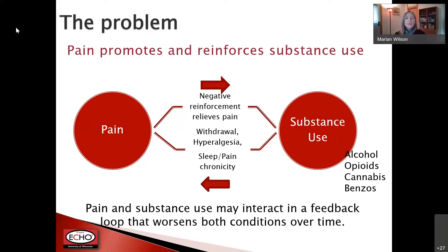When you think about pain and substance use, people use substances because it's positively reinforcing — it's pleasant using alcohol, opioids, cannabis, benzodiazepines. But what's less appreciated is the negative reinforcement, where you're relieving something negative. You're relieving pain or a symptom when you're using those substances. So it's doubly reinforcing to the brain.